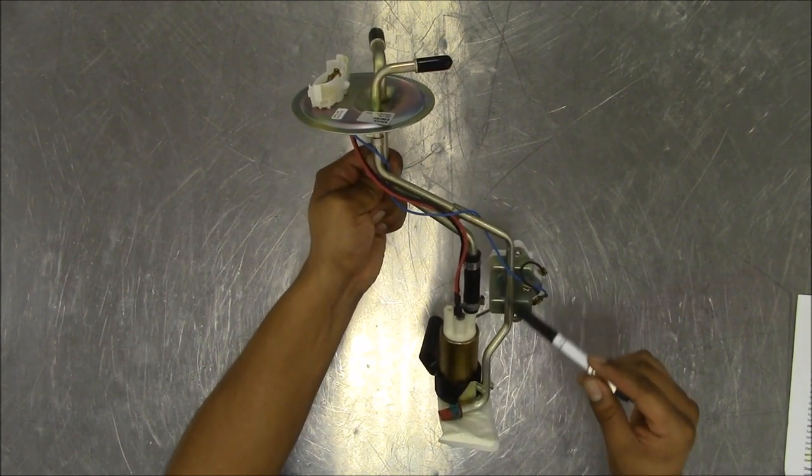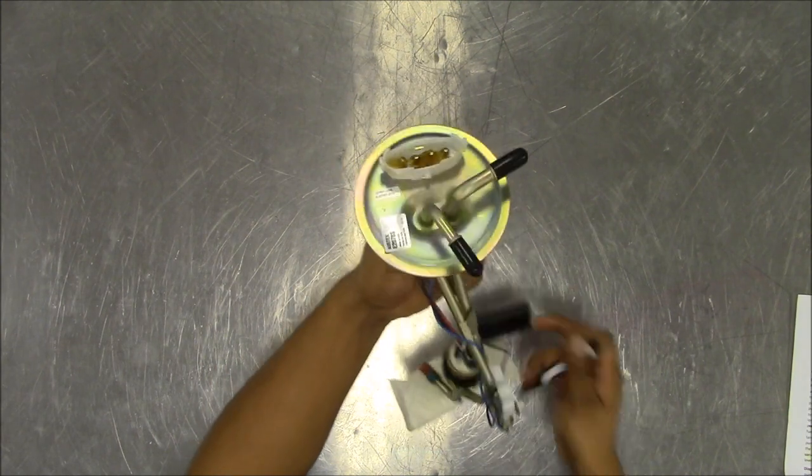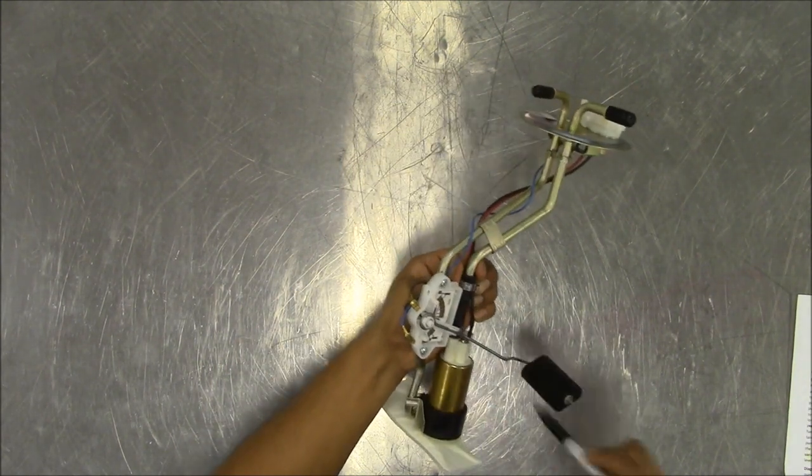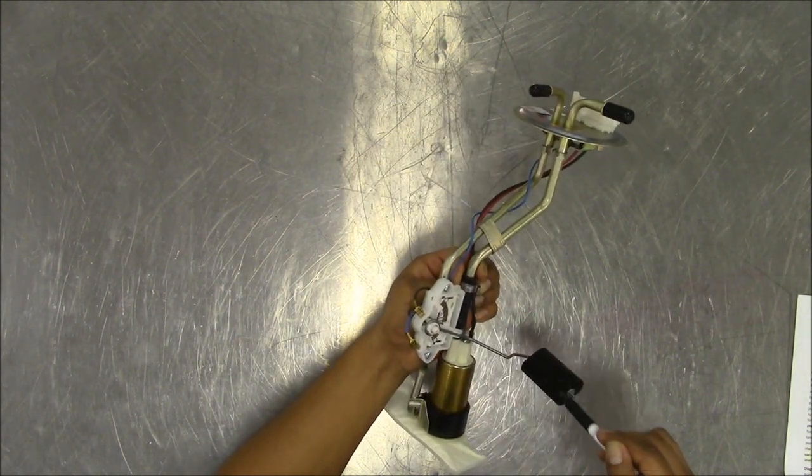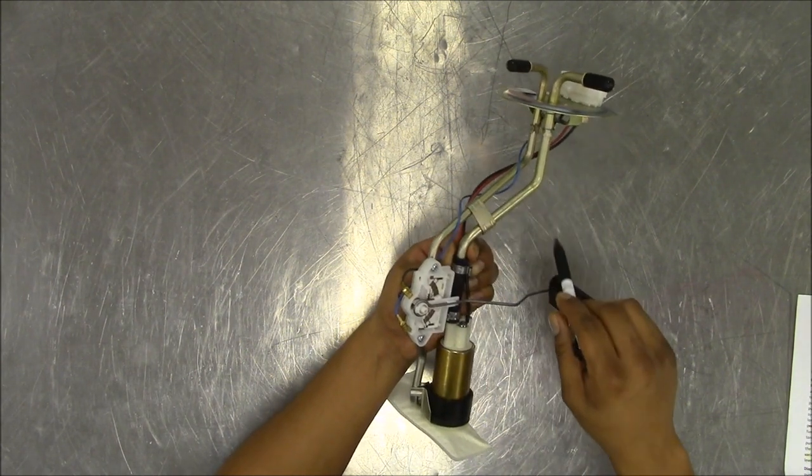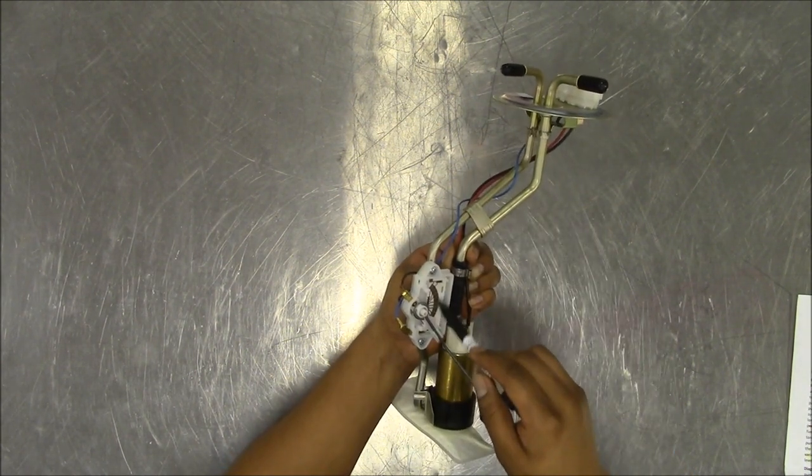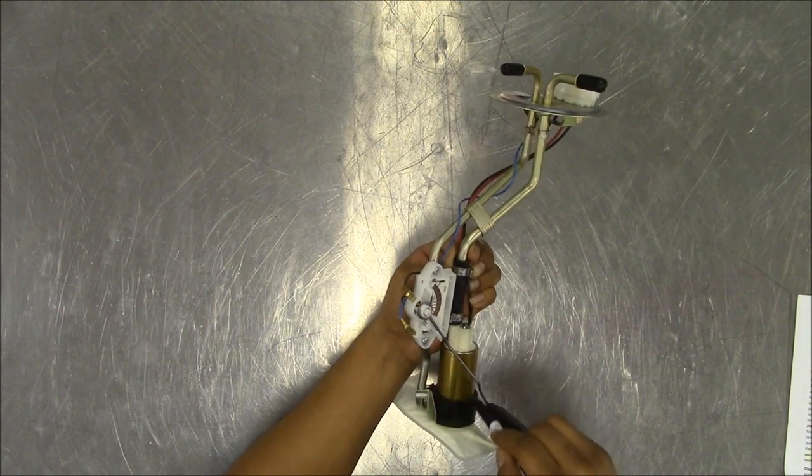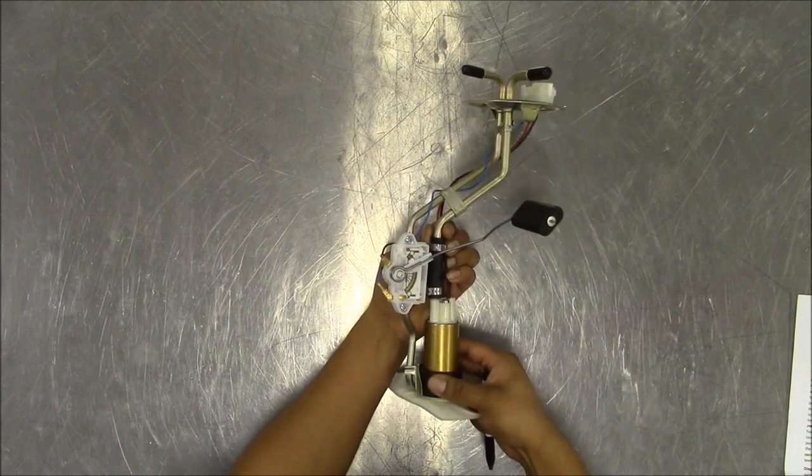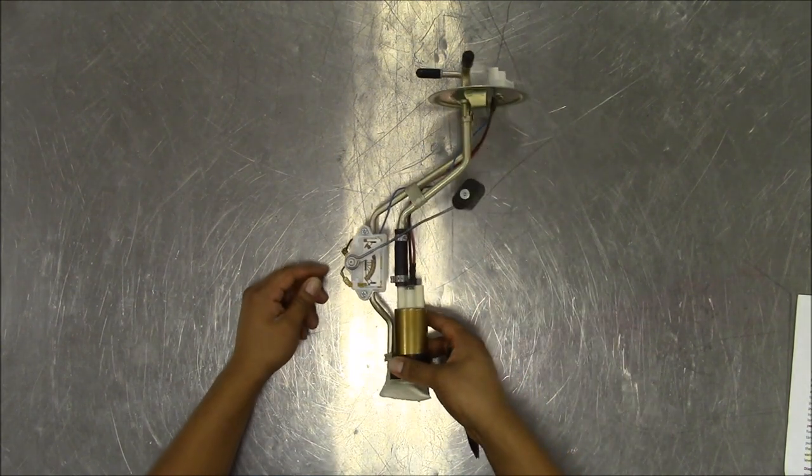On the other side over here we have the fuel sending unit which consists of this wiper arm and a floater that read across a variable resistor. This resistor will send back information to the gauge depending on your fuel level. And that is how the fuel pump works.